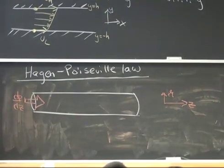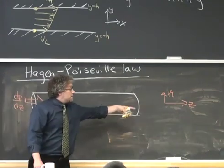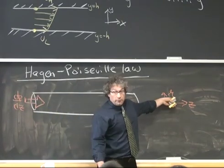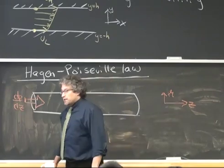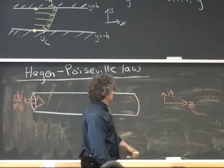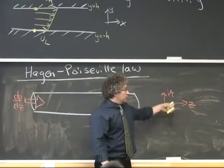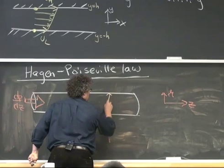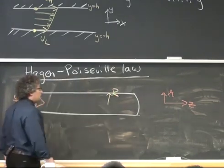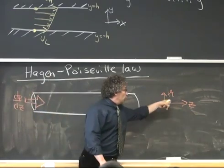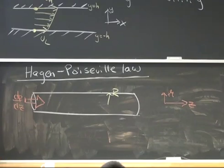This gives me an opportunity to introduce cylindrical notation. I assume I have a tube aligned along the z-axis in a cylindrical coordinate frame. I'll use a script R to denote the radial coordinate. When I talk about spherical coordinates, I'll use a regular R; for cylindrical coordinates, I'll use a script R. Capital R is the radius of the tube, while lowercase script r is the coordinate in that radial direction.